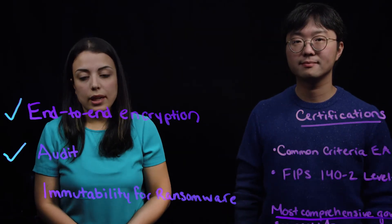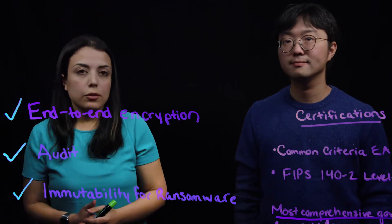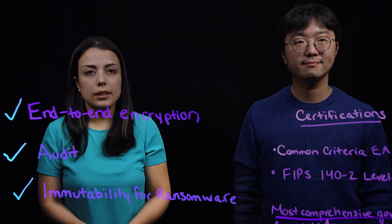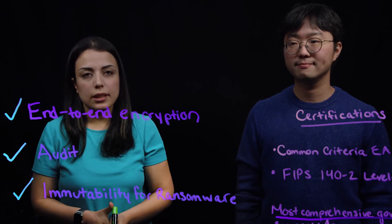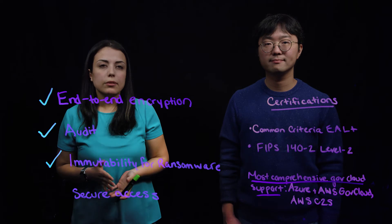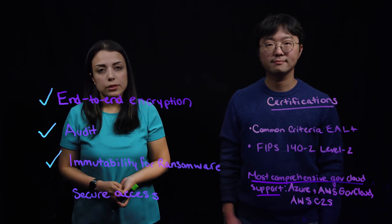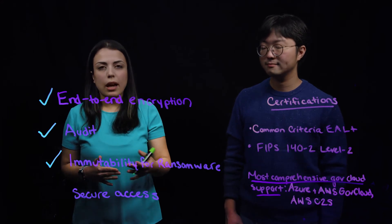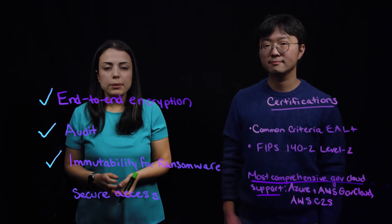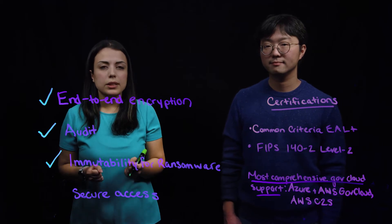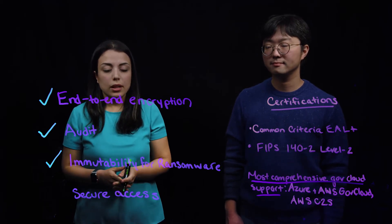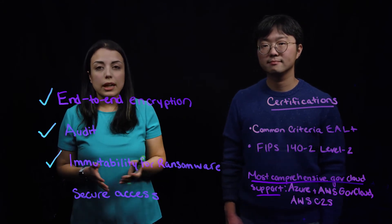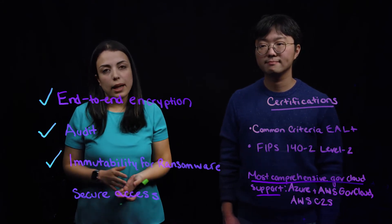The third principle is immutability for ransomware. Rubrik ensures data immutability by continuously validating the data and protecting the customer against any kind of ransomware. Several of our customers have recovered from ransomware attacks in under an hour without any kind of data loss or having to pay any kind of ransom. That's because whenever we ingest any application data, it's always stored in an immutable format. So no external or internal operation can modify the data, and this prevents ransomware from accessing and encrypting backup data.